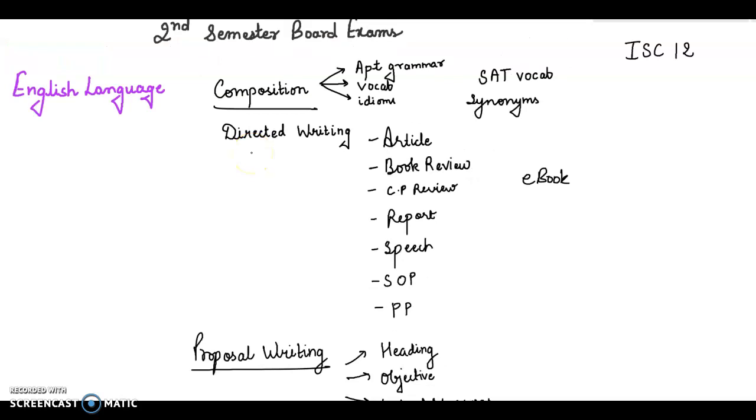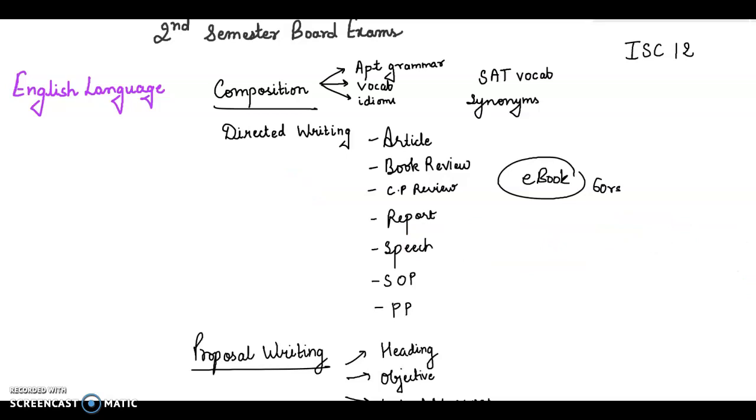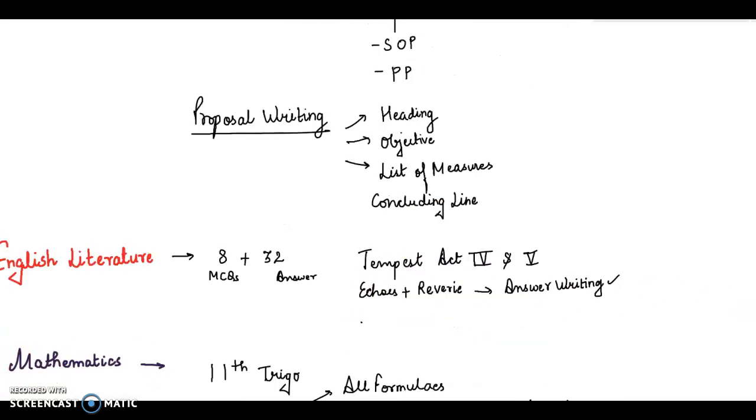For directed writing you have all these formats, you have to practice them. Make sure that you write the correct format. I have covered it in my ebook that is of 60 rupees. You can purchase it, link is in the description box. I have covered directed writing all formats and proposal writing also. Now in proposal writing you need to know about how the structure is made. You have to write the heading, then objectives, list of measures and the concluding statement.